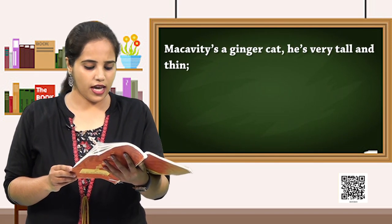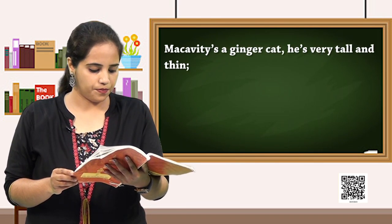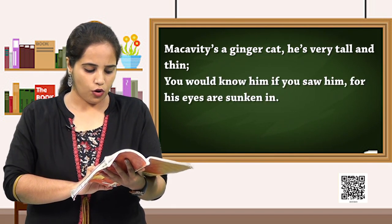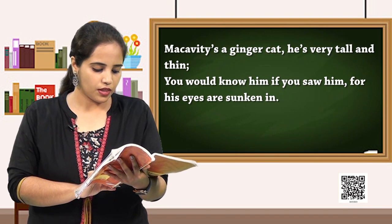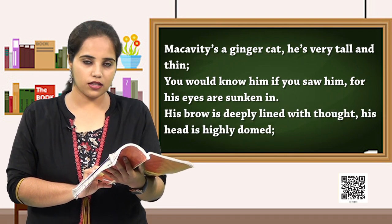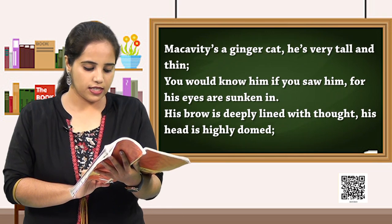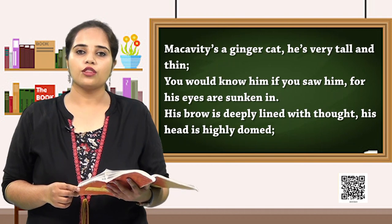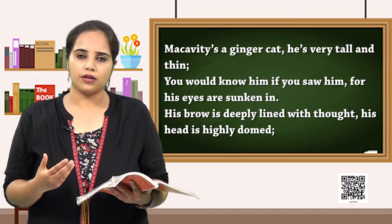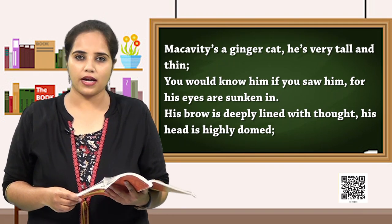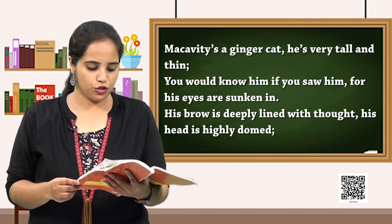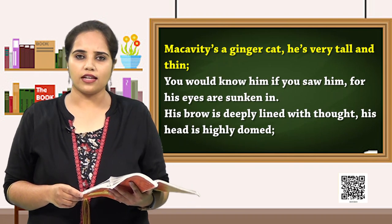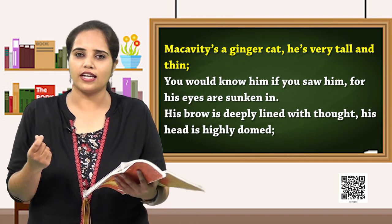'Macavity is a ginger cat, he is very tall and thin. You would know him if you saw him, for his eyes are sunken in. His brow is deeply lined with thought. His head is highly domed.' Entirely in stanza 3, the poet tries to describe the appearance of the Macavity cat. If you look at lines 1 and 2 — Macavity is a ginger cat. What is a ginger cat? Ginger cat is a breed of cat which is usually seen on streets — that is thin and long.